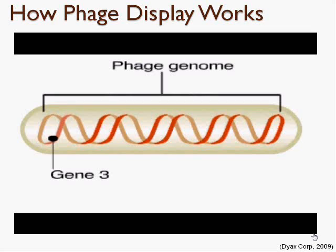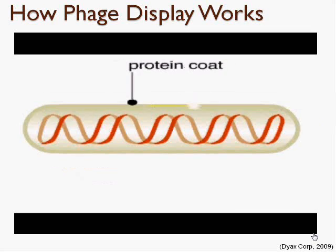As you can see, phages are composed of two components: genetic material and a protein coat. The protein coat protects the phage as it passes from cell to cell.